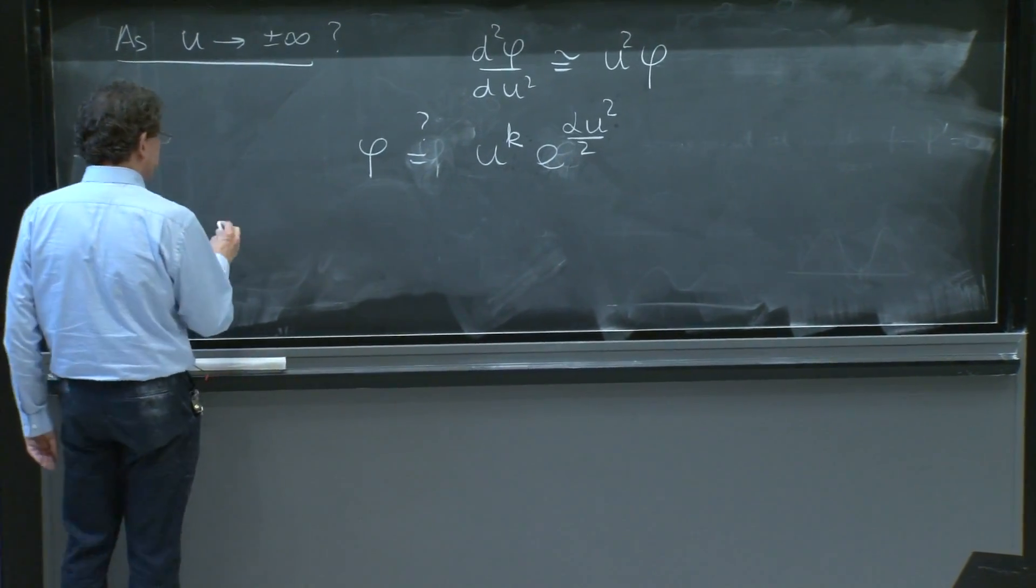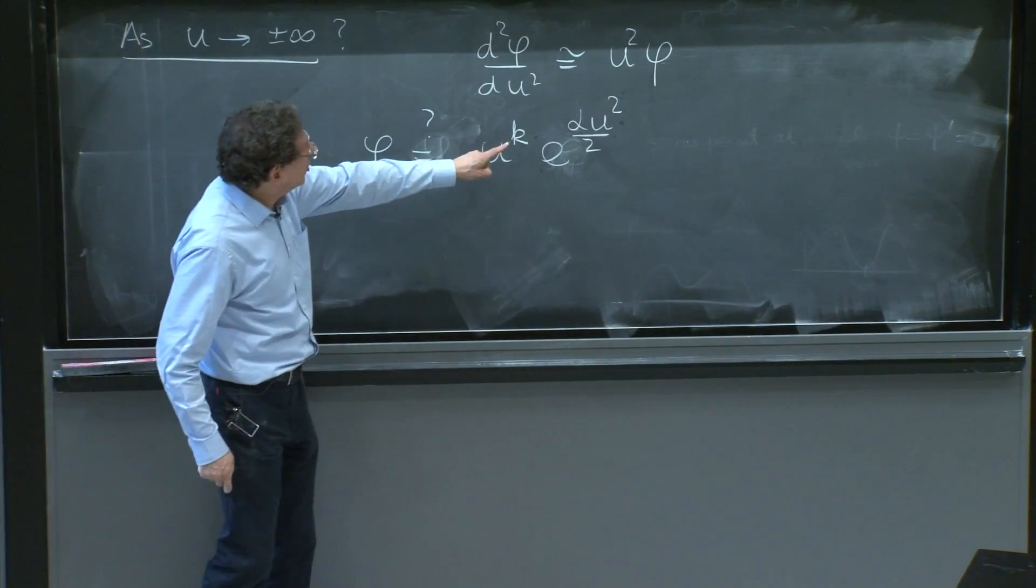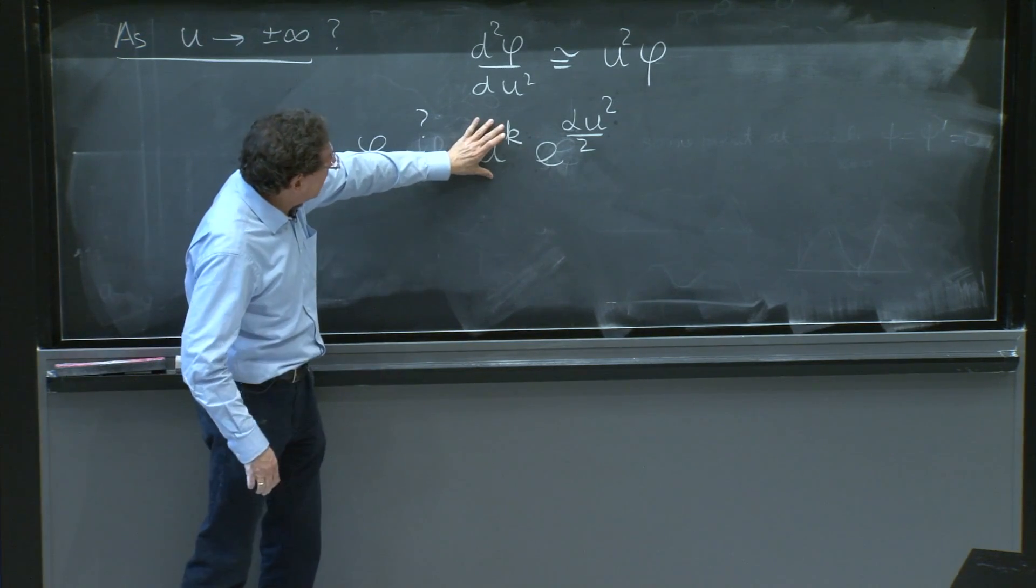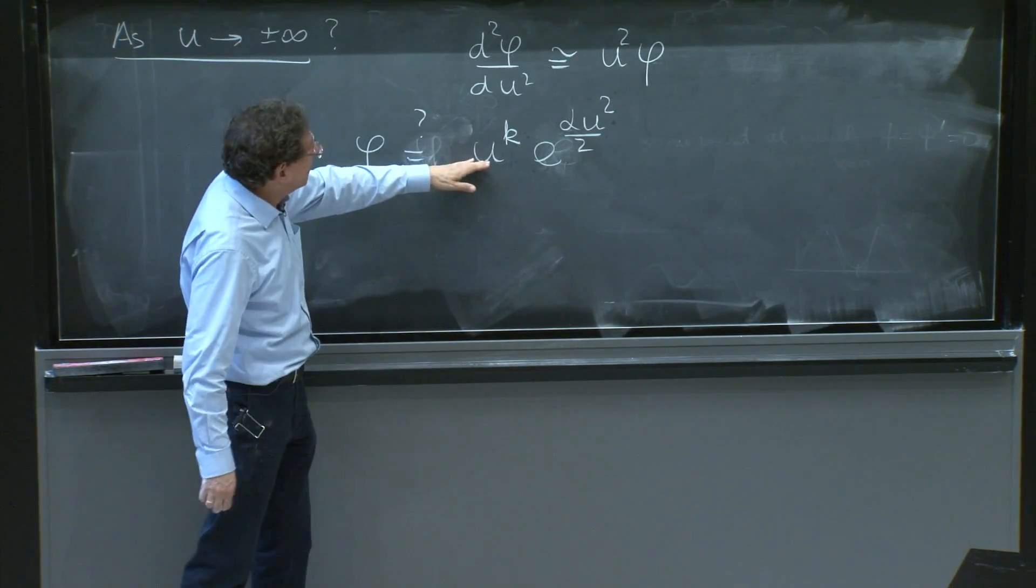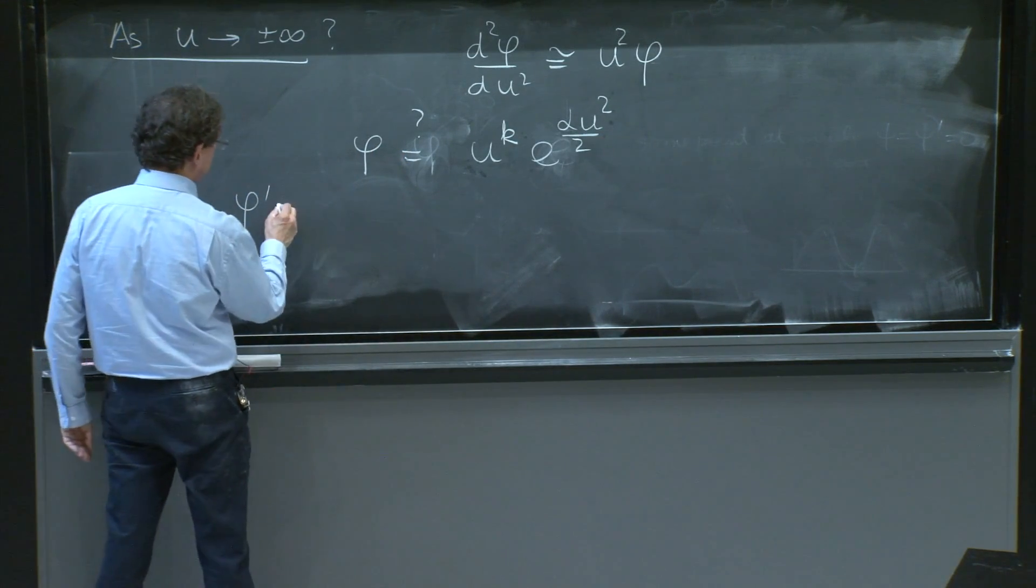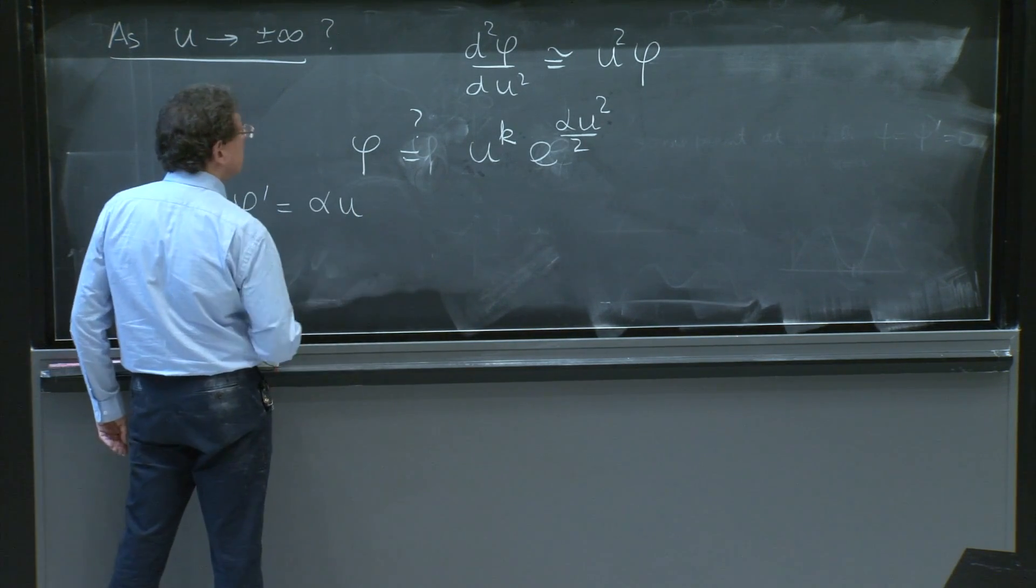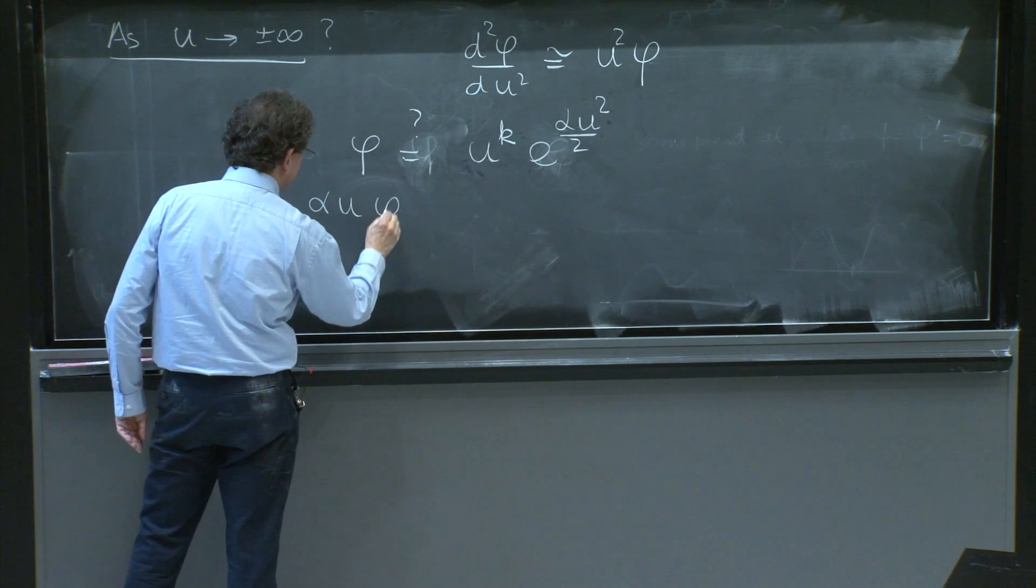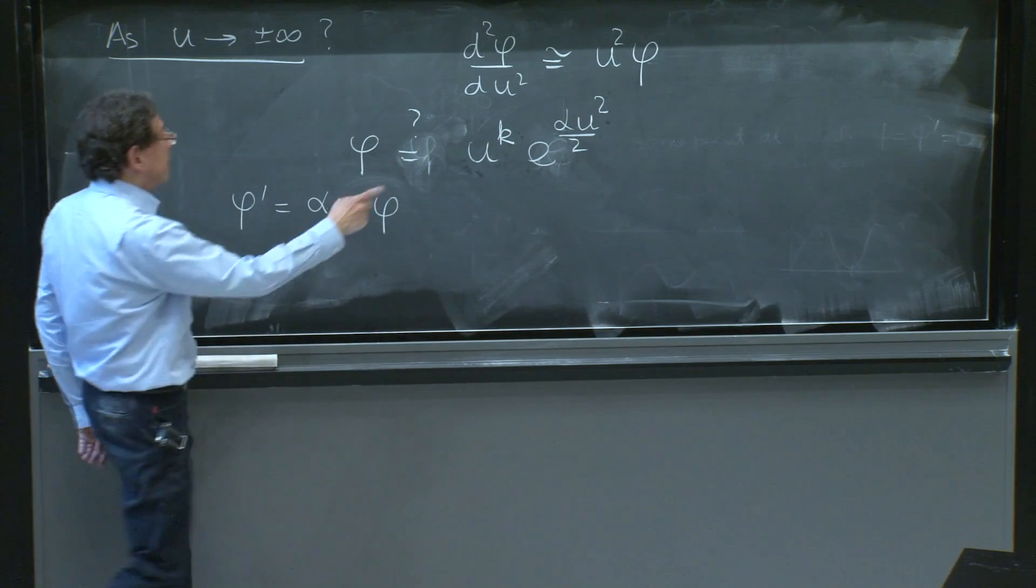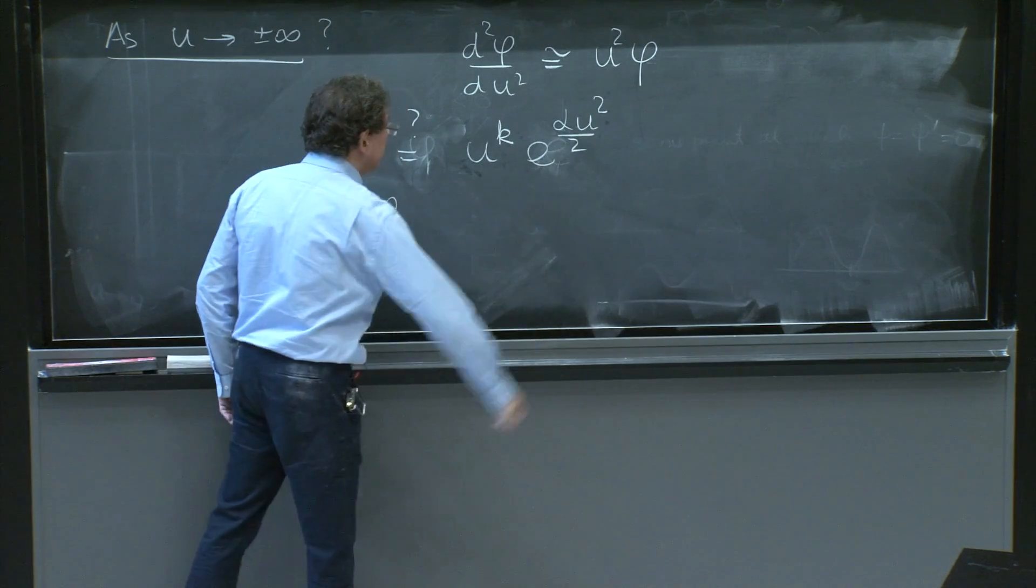Well, if we take two derivatives, if I differentiate the u to the k, I get u to the k minus 1. I lose powers of u. If I differentiate the exponential, I get alpha times u times the same function. See, that's roughly speaking what's happening. You differentiate the thing that diverges the most.